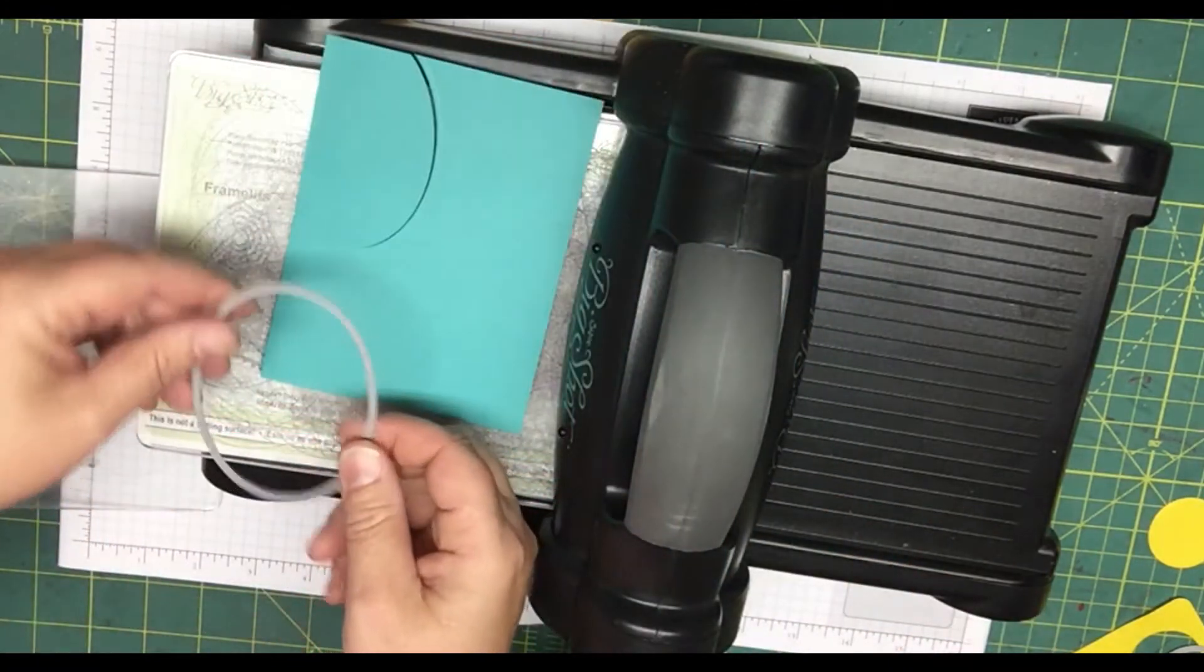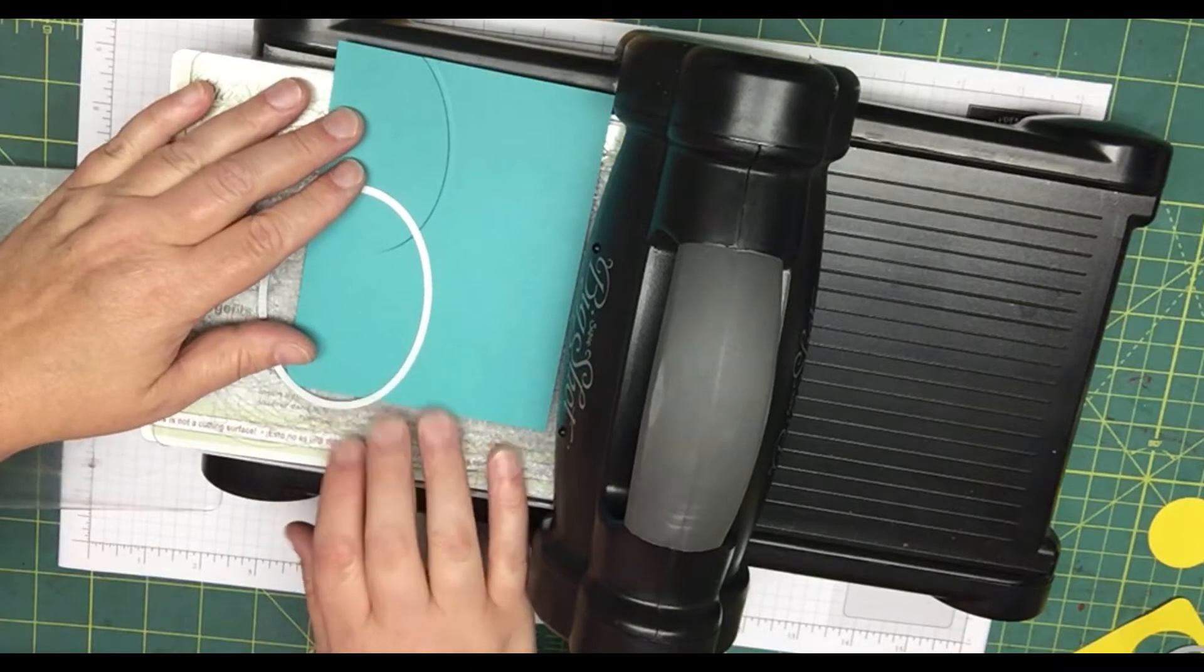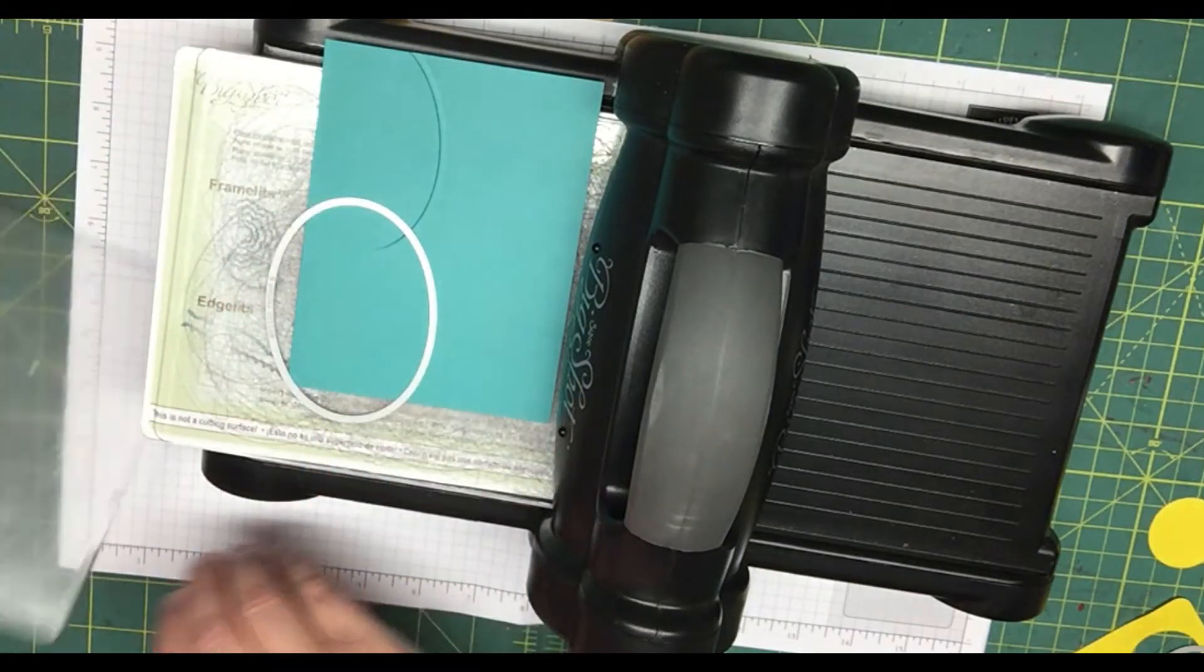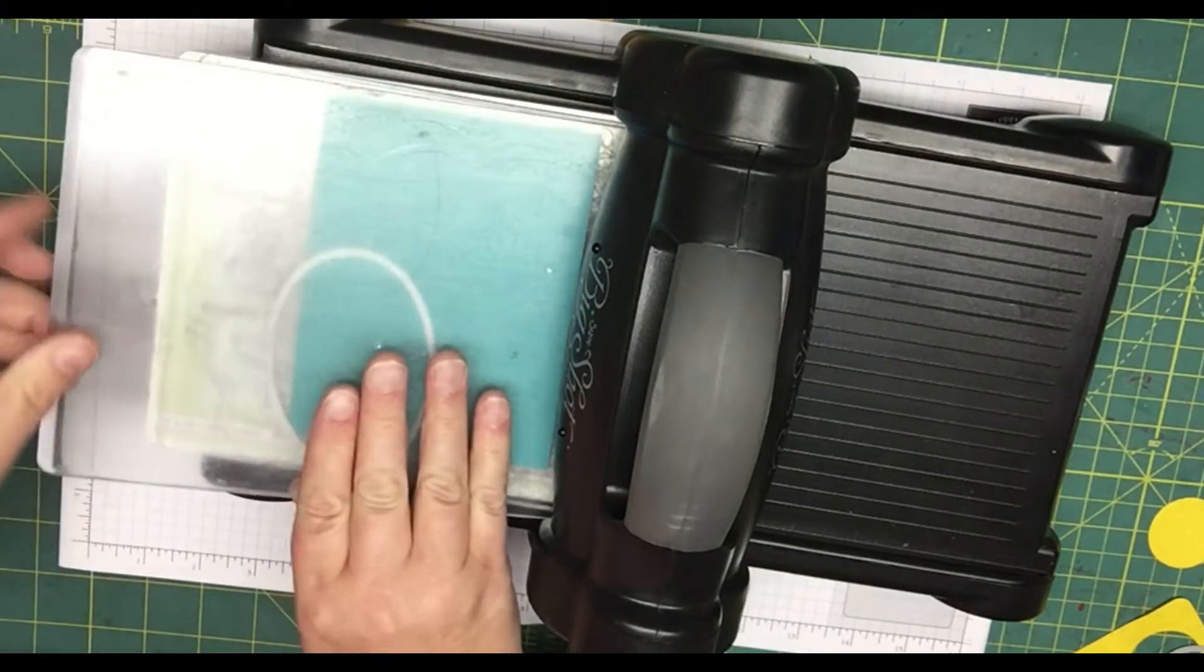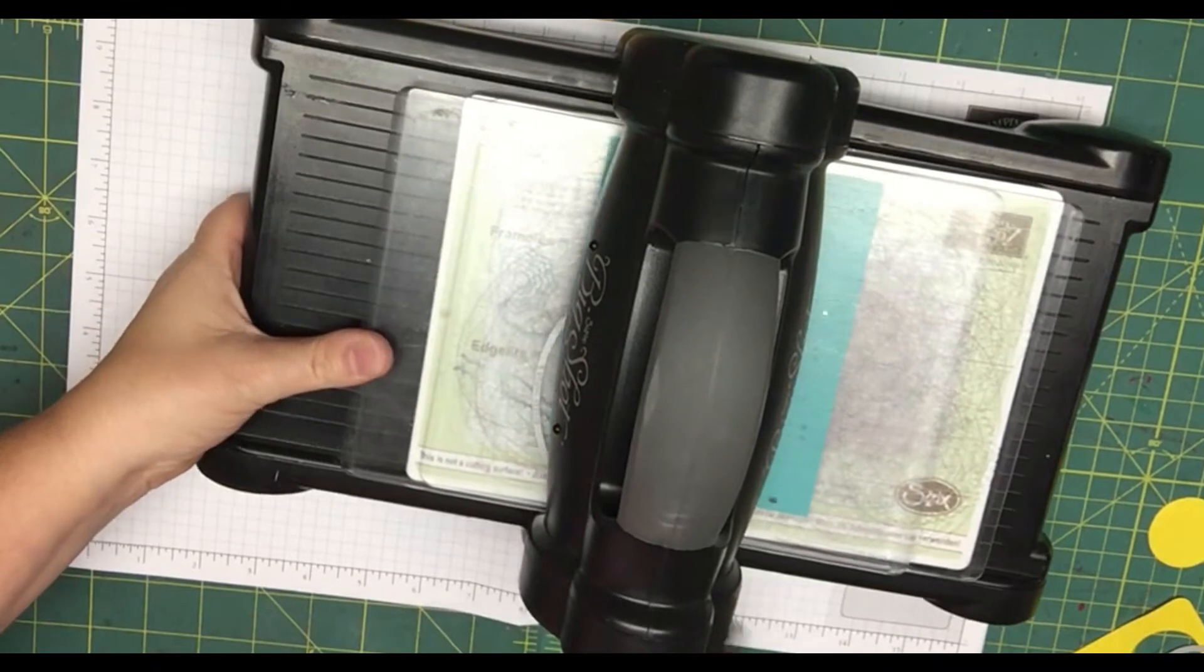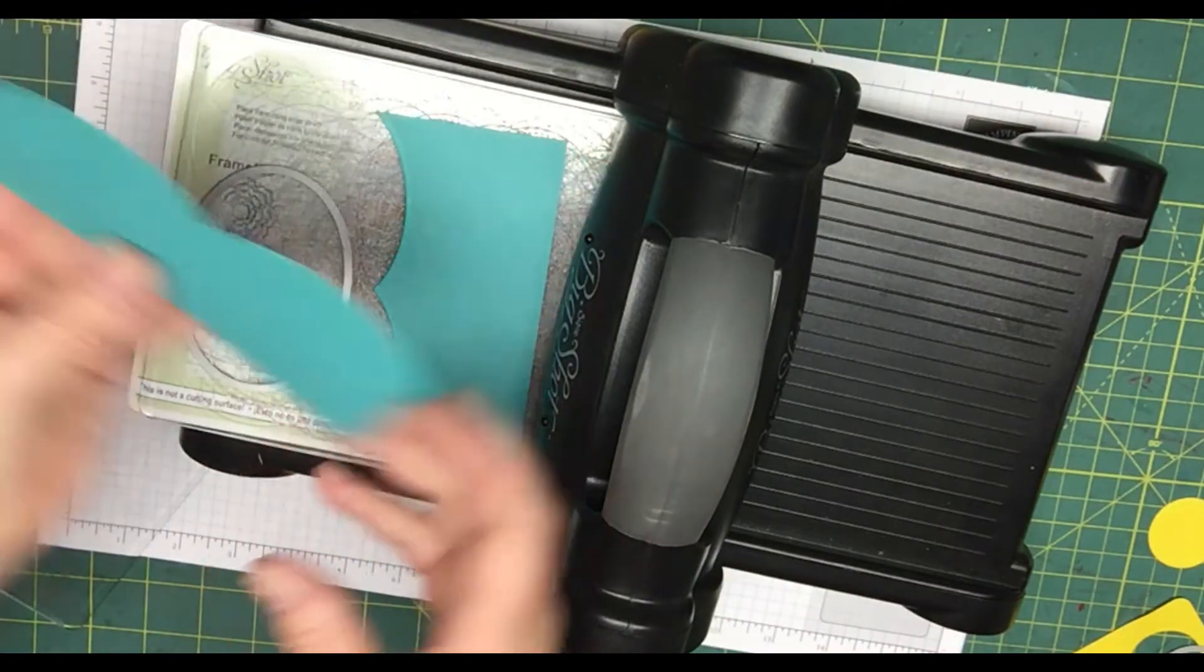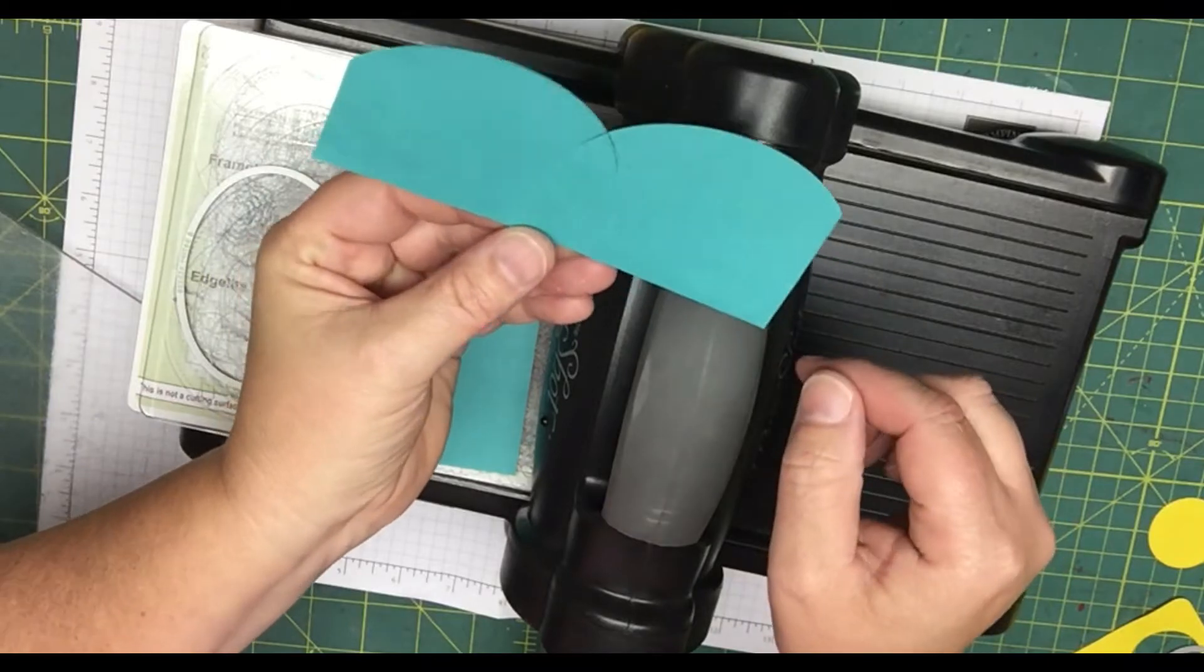So what you're going to essentially have is it's going to be partially cut just like so. Then you're going to take your thinlet and you're going to position it over on the other side again trying to make the hump of the hill. And then you're going to do the exact same thing. You're going to run it partially through. You don't want it to cut all the way through the paper. So you'll get something like this. This will be your hill.